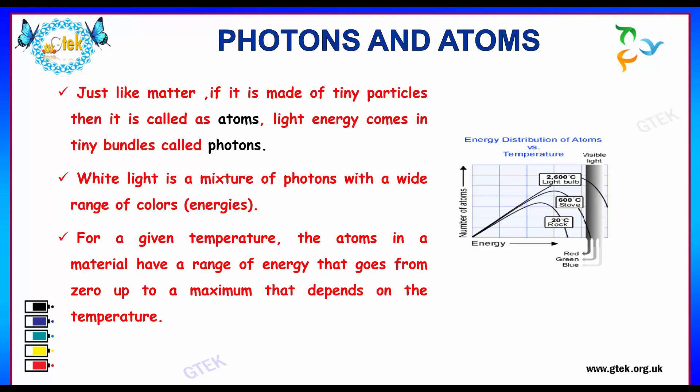White light is a mixture of photons with a wide range of colors that is considered to be energies. You can see here the energy level representation. This is the representation of energy distribution of atoms versus temperature.